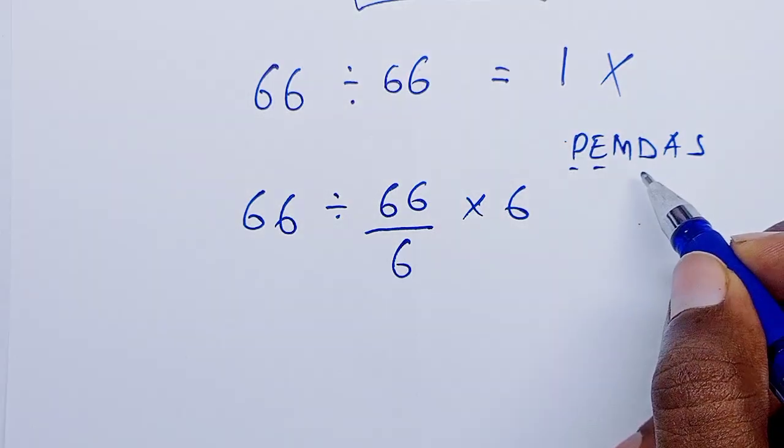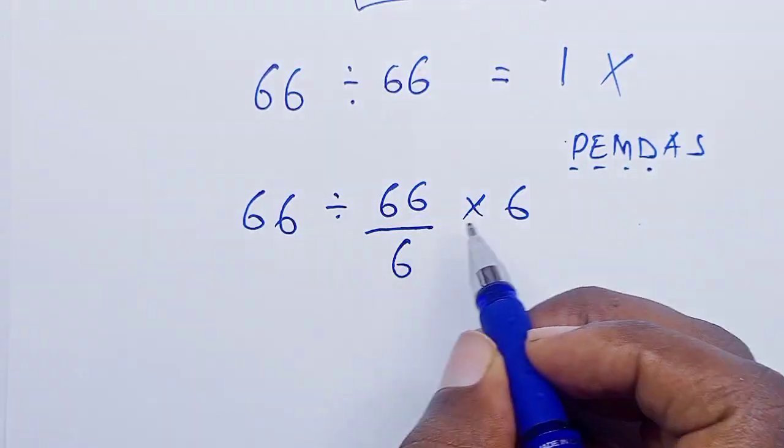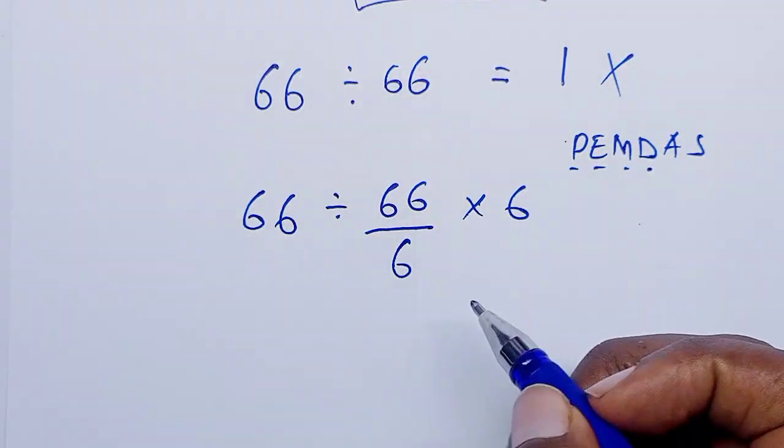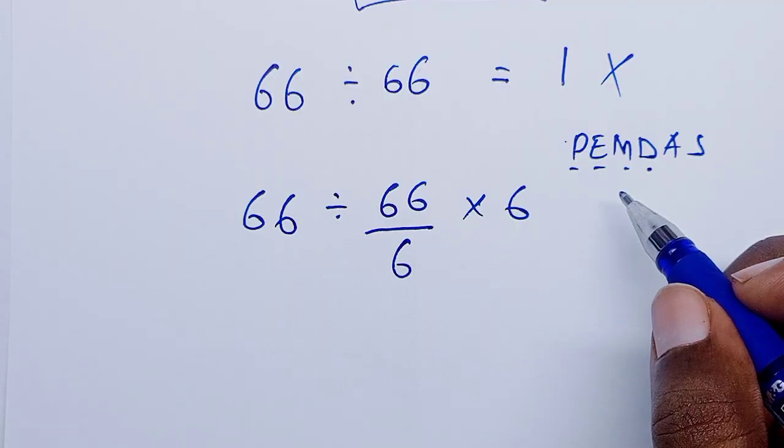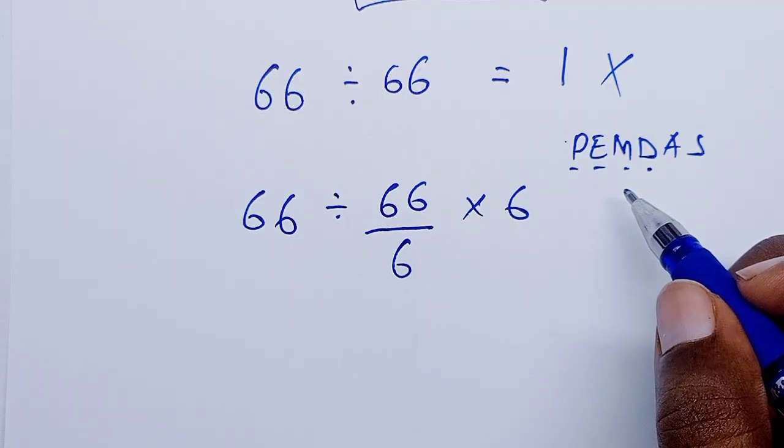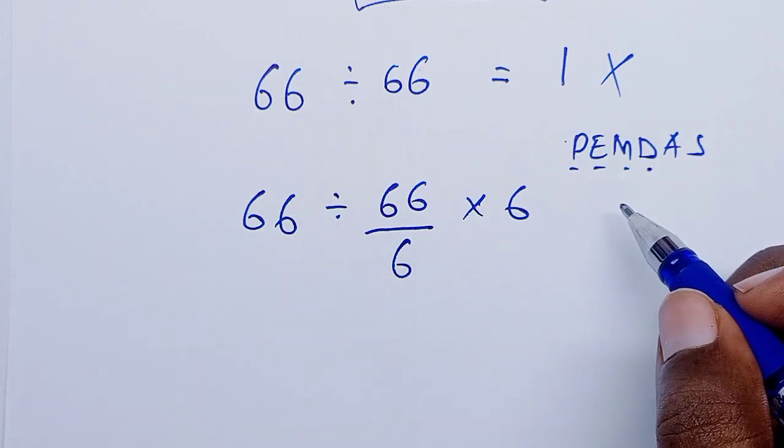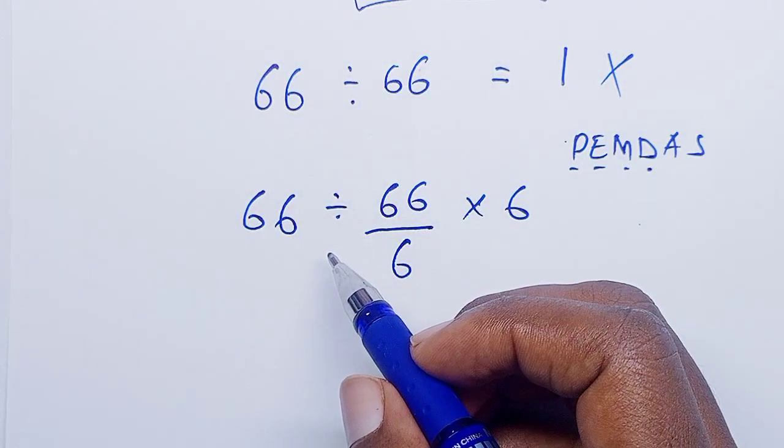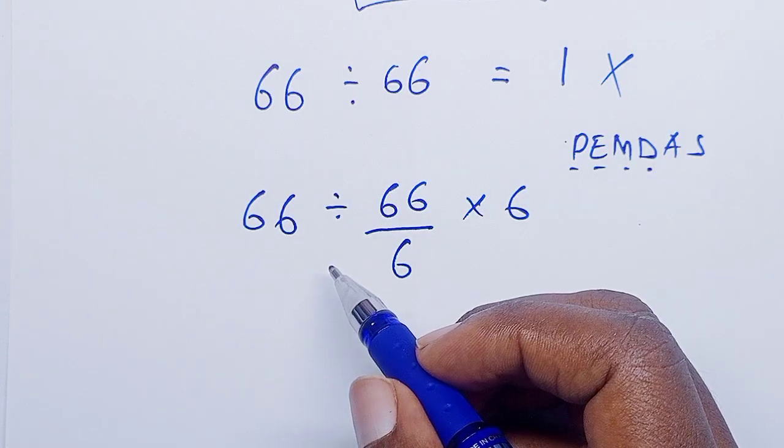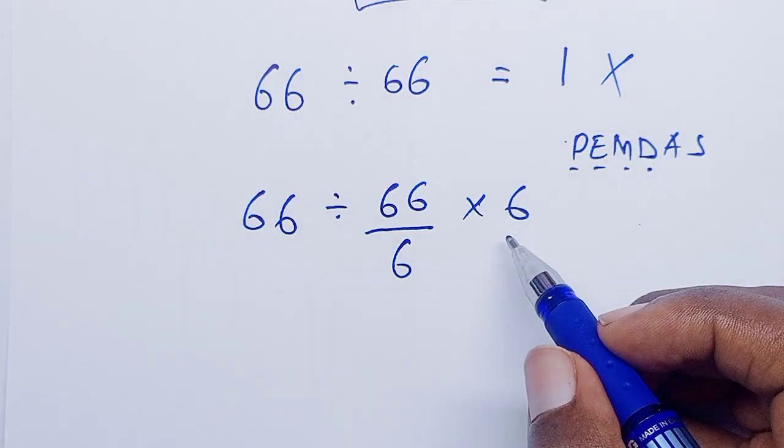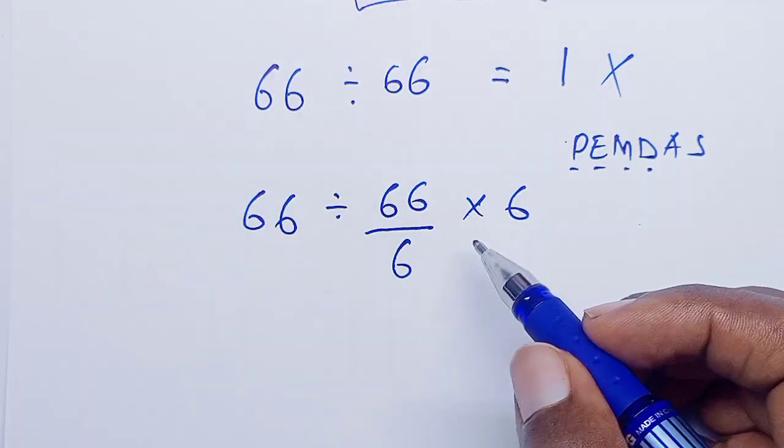Now here we don't have parentheses, nor do we have exponents. We have multiplication and division. For multiplication and division, you can consider either first, but the arrangement you use is that whichever appears first from the left hand side to the right hand side is what you consider before the other. In this case, division is appearing before multiplication, so you must work out the division before the multiplication.